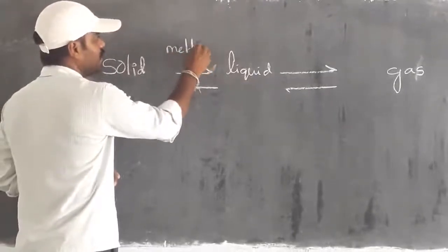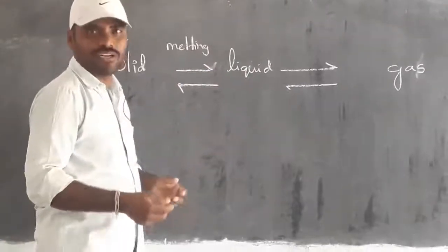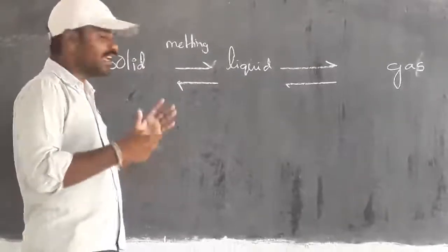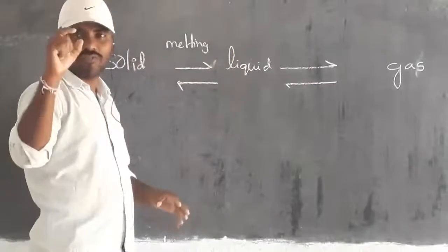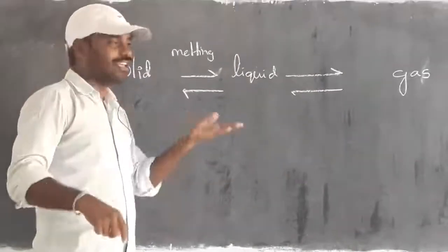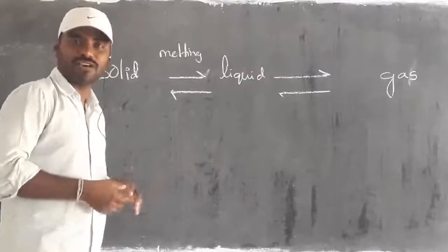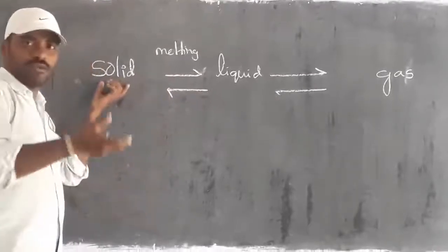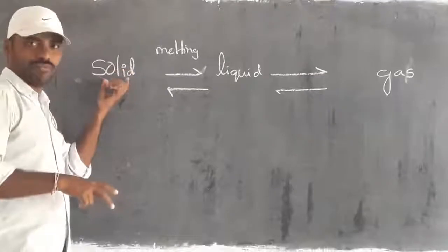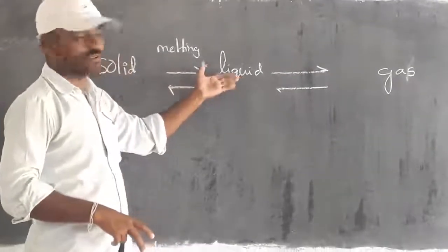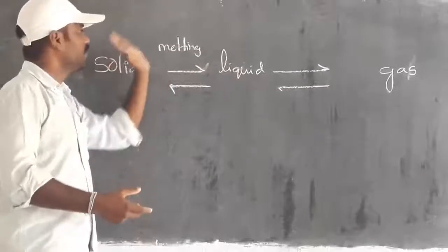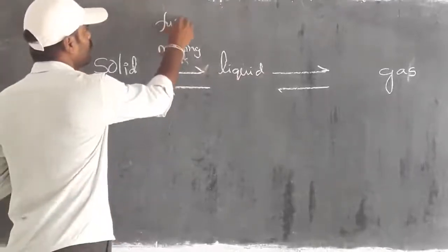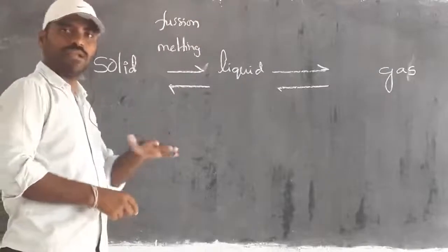When you take the ice cube or chocolate from the fridge, you say the ice or chocolate is melting. Melting means solid changes into liquid. A solid form of ice cream or chocolate — like Cadbury, Five Star, or a cup of ice cream — up to the time it is in the fridge it is in solid form; when you take it out it changes into liquid. That process, changing of solid to liquid, we call melting. It is also known as fusion.